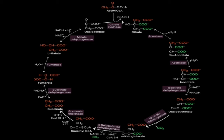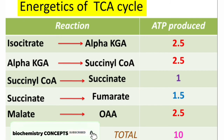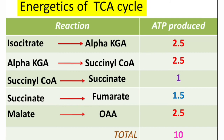Oxidation of one molecule of acetyl-CoA produces three molecules of NADH, one molecule of FADH2, and one molecule of GTP. For the energetics: the conversion of isocitrate to alpha-ketoglutarate produces one NADH, which generates 2.5 ATPs in the electron transport chain. The conversion of alpha-ketoglutarate to succinyl-CoA also produces one NADH, also equal to 2.5 ATPs.